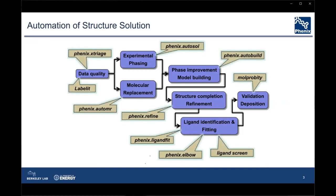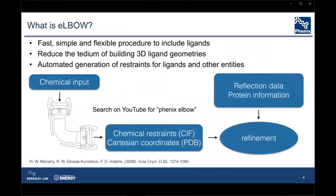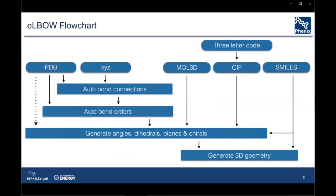Chemical restraints are generally supplied by eLBOW. eLBOW is a program in Phoenix responsible for the generation of chemical restraints, which implies that novel ligands are its primary fodder. Chemical input is used to generate restraints in CIF format and a geometry file in PDB format. The restraints are then used in any of the refinement packages in Phoenix. You can learn more about eLBOW and other Phoenix programs on YouTube.